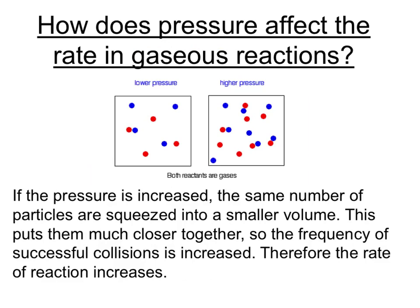Increasing the pressure of a gas mixture has the same effect as increasing the concentration of a solution. It forces the particles close together and makes them more crowded. If these particles are forced closer together, then the frequency of successful collisions between them will also be increased, and that will increase the rate of reaction.